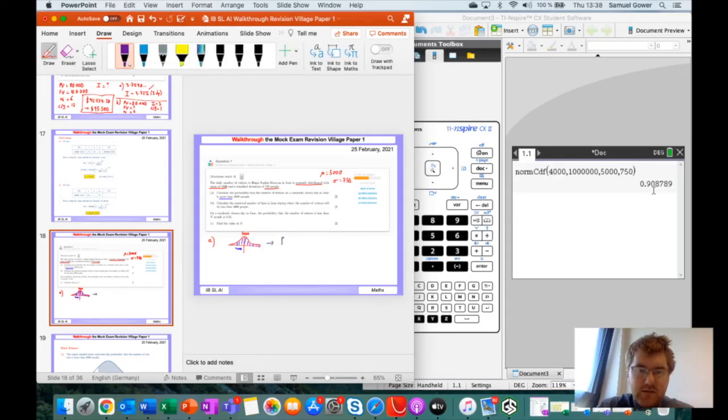The probability will be equal to 0.908789. If we round this to three significant figures, which is standard, it'll be 0.909.